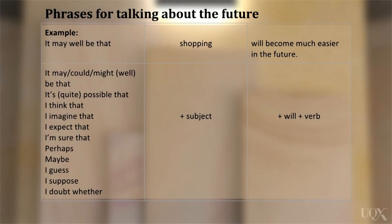Here are some structures that you can use when talking about the future. Each phrase can be followed by a subject, such as shopping, then will, plus another verb, and then the rest of your sentence. For example, you can say: 'It may well be that shopping will become much easier in the future.' Listen to each phrase to hear how it is pronounced.